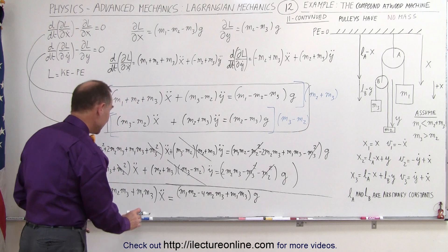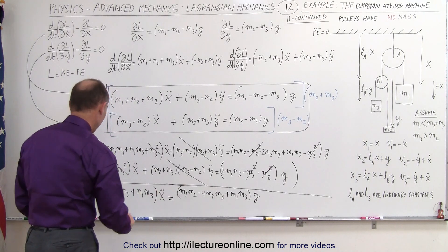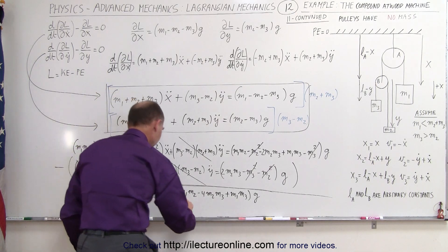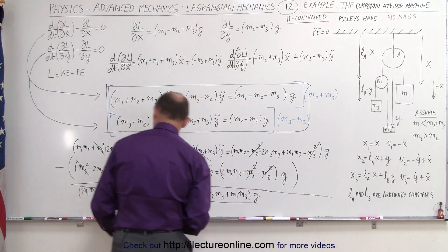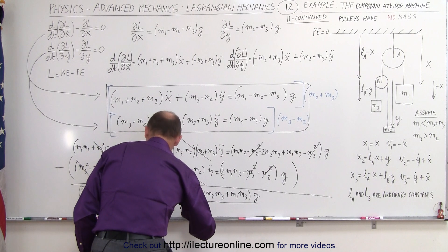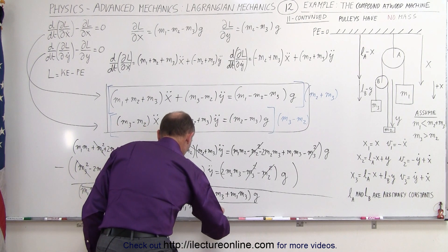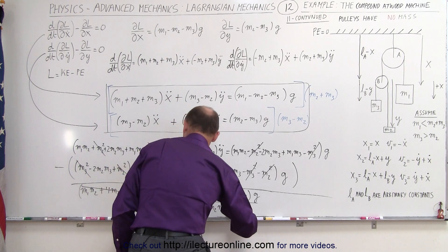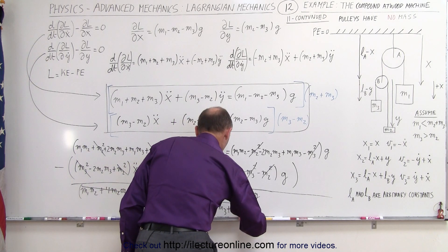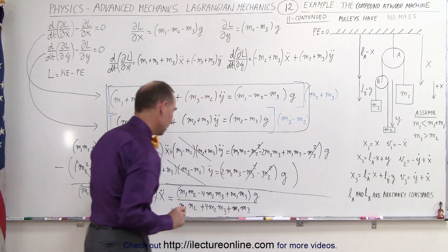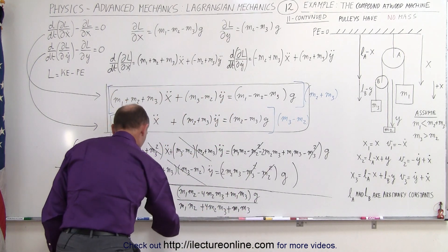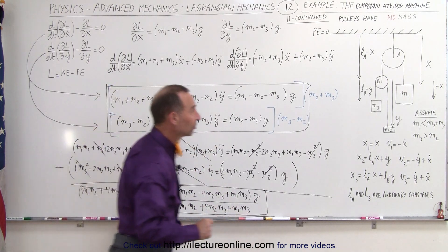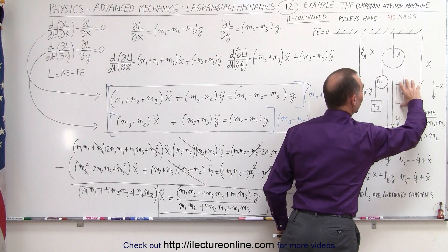Finally, to get the explicit value for x-double-dot, we divide both sides by the coefficient. So x-double-dot equals m1·m2 minus 4·m2·m3 plus m1·m3, divided by m1·m2 plus 4·m2·m3 plus m1·m3, times g. This is the final answer for the acceleration of m1.